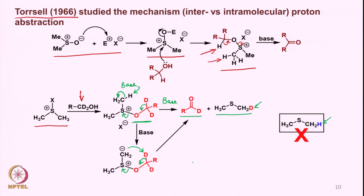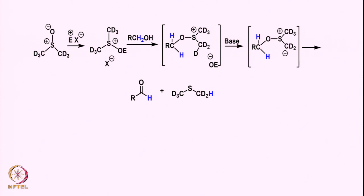The mechanism proposed is that the base picks up the proton, generating a negative charge, and this undergoes an intramolecular abstraction of the deuterium, forming the corresponding ketone and the dimethyl sulfide containing one deuterium. In another experiment, he took DMSO with two CD₃ groups attached to it, and activated with any of the electrophiles discussed, forming a first crucial intermediate to which a normal (non-deuterated) alcohol was added.